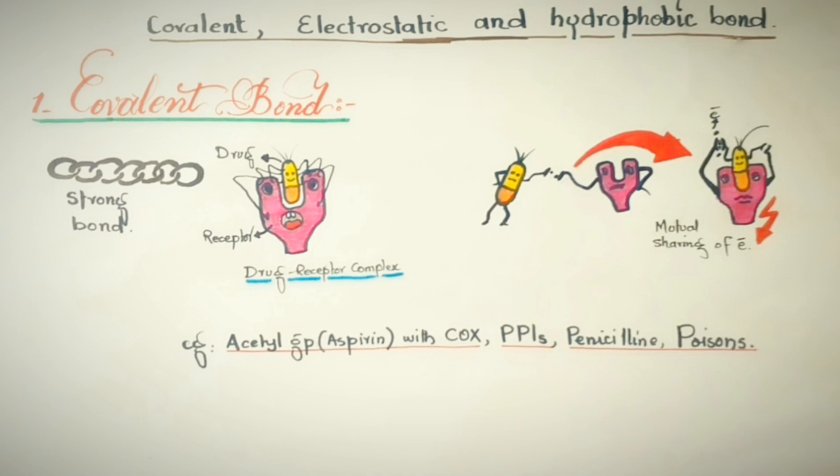And the drug effect only diminishes with the synthesis of new receptors, which may take time from hours to days. For example, when PPI blocks the hydrogen-potassium ATPase, this transporter needs 24 hours to re-establish and do its normal functioning.